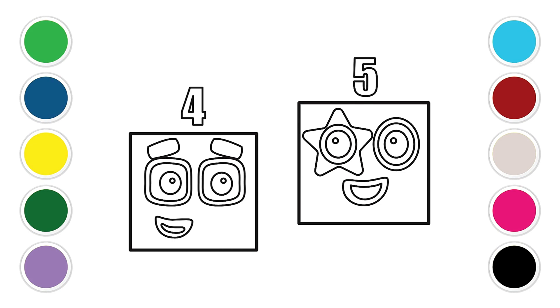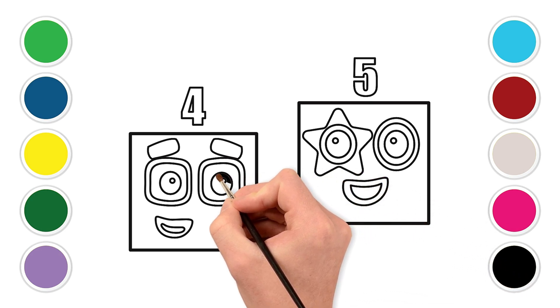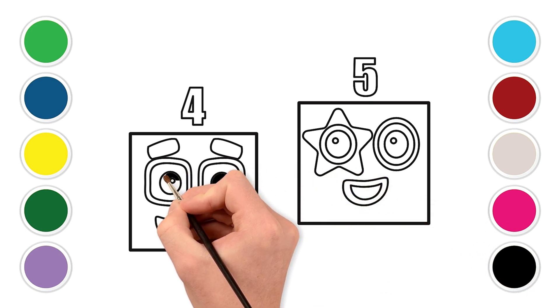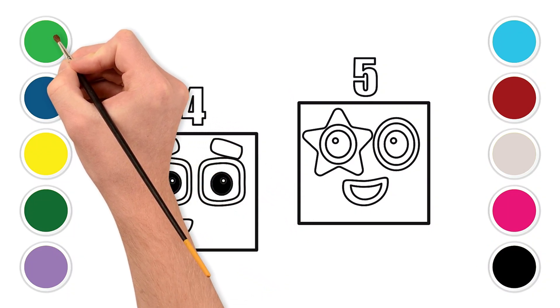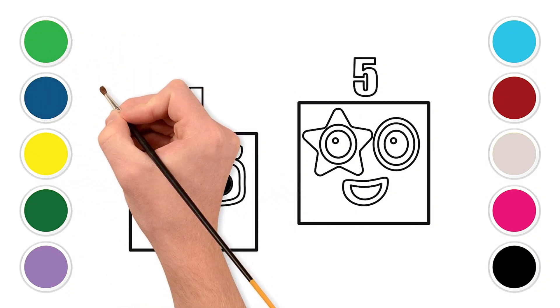Now let's bring four and five to life with color. First, color the inside of both eyes black. B-L-A-C-K. Color the body green. G-R-E-E-N.